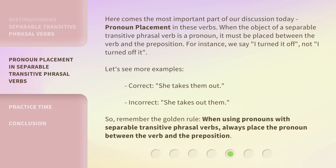Here comes the most important part of our discussion today: pronoun placement in these verbs. When the object of a separable transitive phrasal verb is a pronoun, it must be placed between the verb and the preposition. For instance, we say "I turned it off," not "I turned off it." More examples — correct: "she takes them out"; incorrect: "she takes out them." Remember the golden rule: when using pronouns with separable transitive phrasal verbs, always place the pronoun between the verb and the preposition.